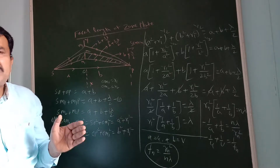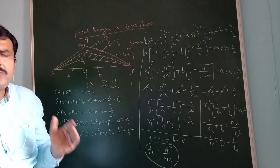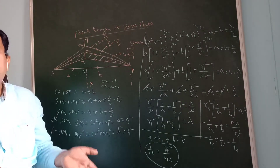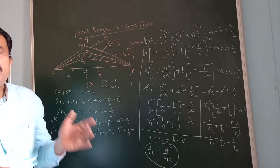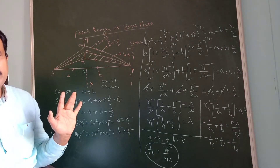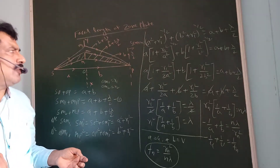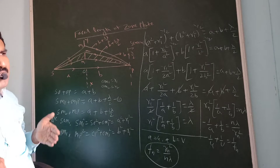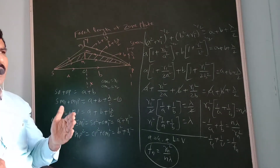The specially constructed screen in which alternate zones — either even-numbered or odd-numbered zones — have light cut off or stopped is called a zone plate. If we construct the zone plate so that odd-numbered zones (1, 3, 5...) transmit light, the even-numbered zones are cut off.